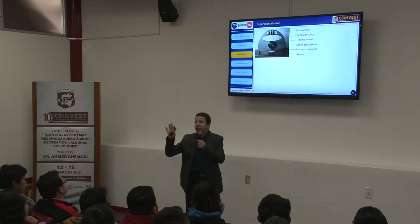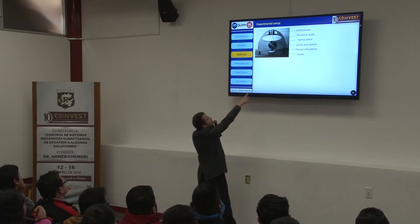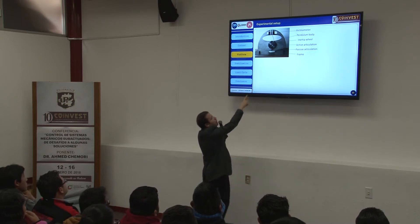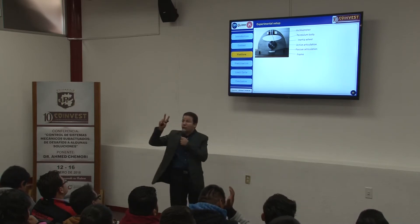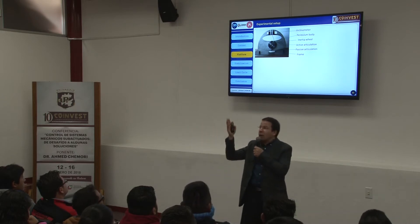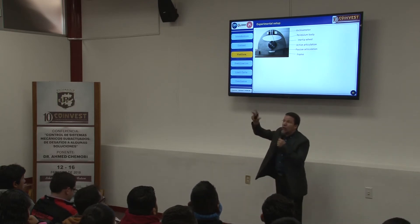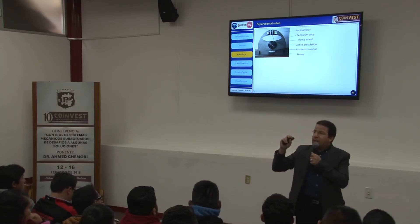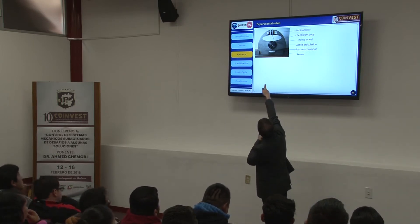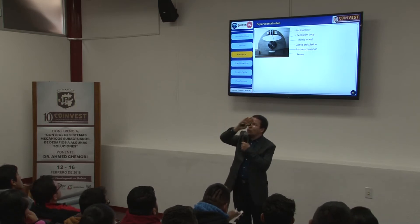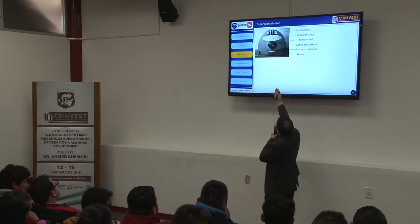Let me present our experimental platform: the inertia wheel inverted pendulum. The main mechanical components are the body of the inverted pendulum, a passive articulation joint, and the active joint — the inertia wheel with a motor to control its rotation. We measure two degrees of freedom: the angle with the vertical, measured by an inclinometer, and the inertia wheel angle, measured by an encoder on the Maxim motor.